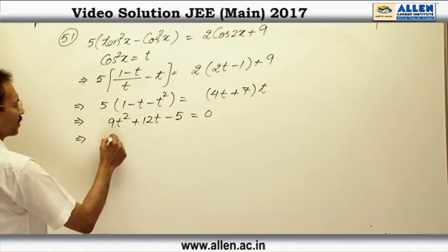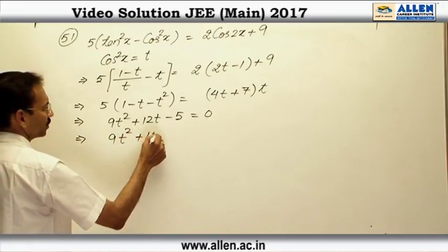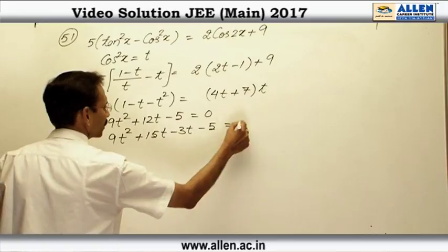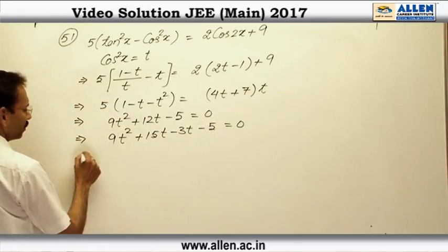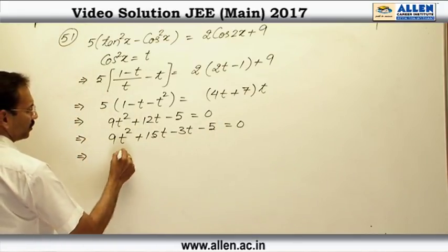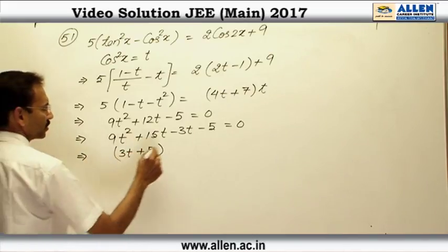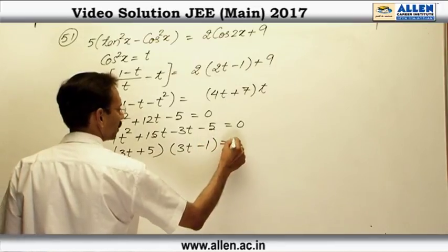We will factorize it: 9t square plus 15t minus 3t minus 5 equals to 0. The factors will be 3t plus 5 and the other factor is 3t minus 1.